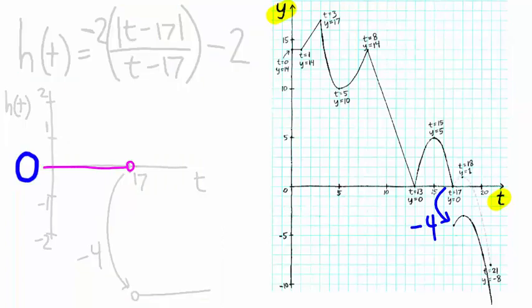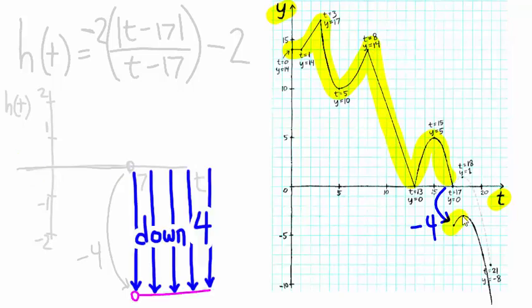We wanted to add zero along this stretch. We didn't want to change it at all, and we wanted to add negative four. We wanted to vertically translate this portion downward by four.